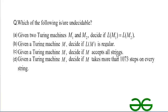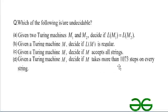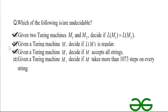Statement four: given a Turing machine M, decide if M takes more than 1073 steps on every string. Since the number of steps is finite and given explicitly in the question, we can design an algorithm — if the machine takes fewer than 1073 steps it rejects, else it accepts. Hence this problem is decidable. So only option D is decidable, and the correct undecidable answers are A, B, and C.